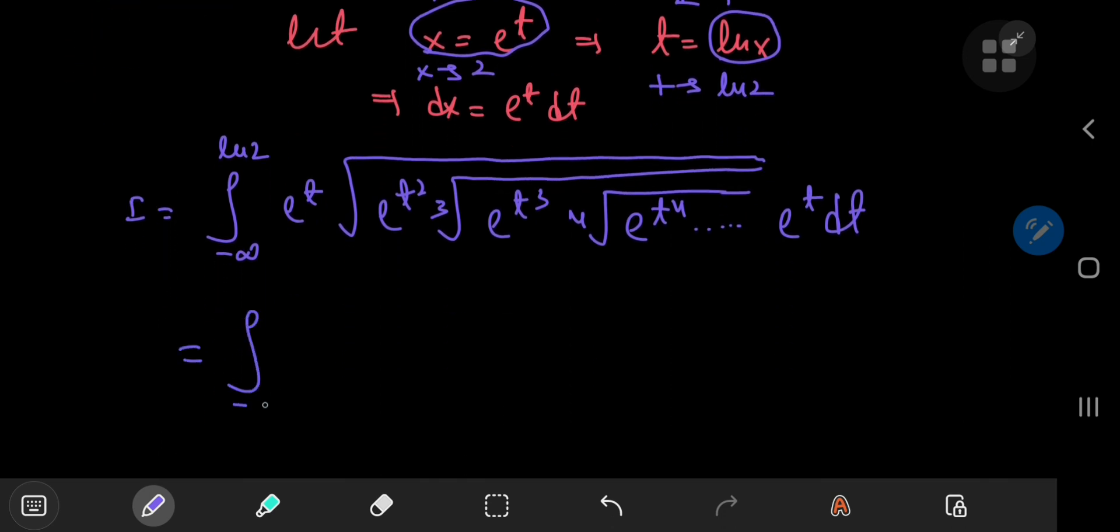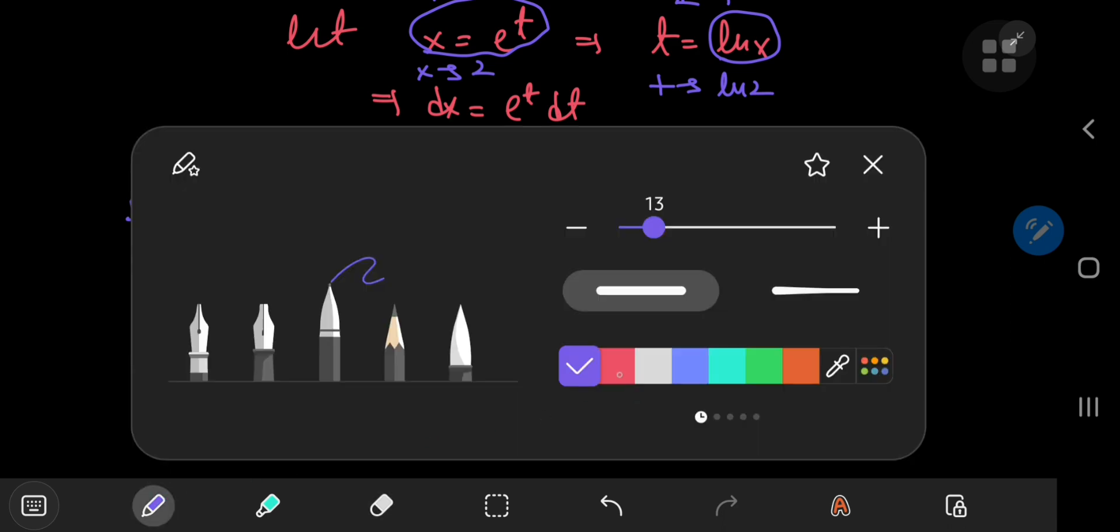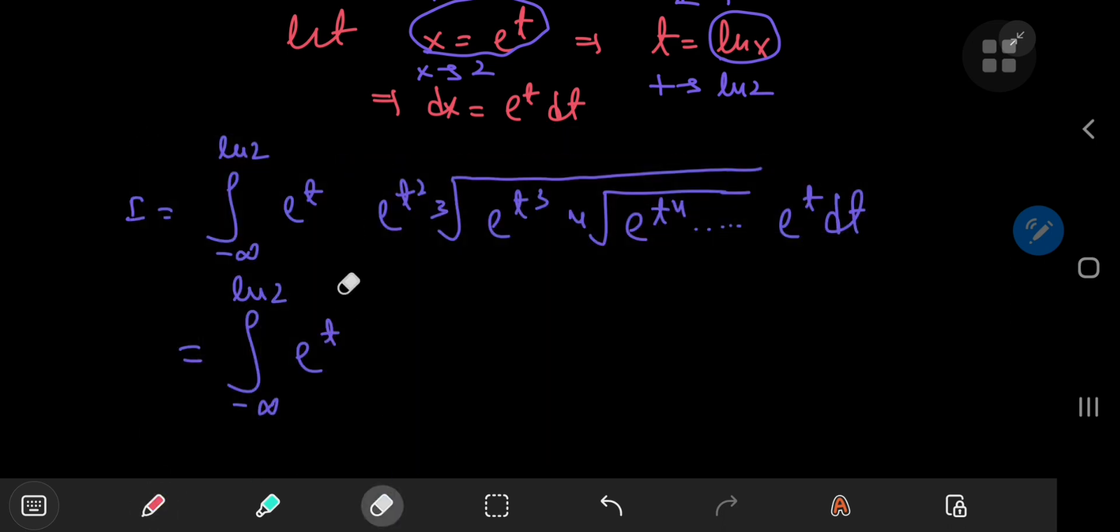Now I'm going to just break down or deconstruct these nested radicals. So let's write this giant square root as the power of 1 by 2. So this e to the t is experiencing 1 exponent. So we can write it as e to the t squared by 2.